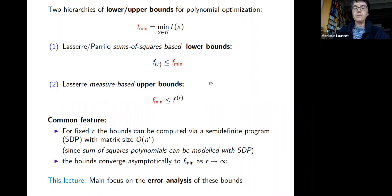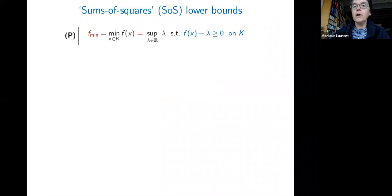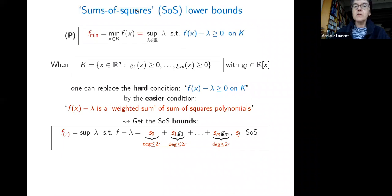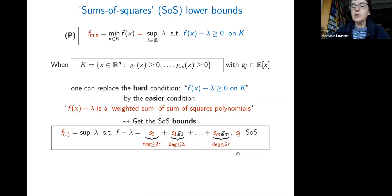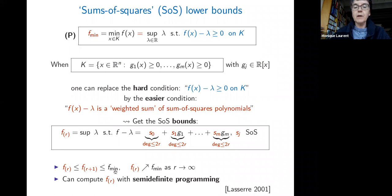To fix ideas: we want to minimize f over K, i.e., find the largest scalar lambda for which f minus lambda is non-negative over K. Since K is semi-algebraic (defined by polynomial inequalities), we replace this hard non-negativity condition by writing f minus lambda as a conic combination of the constraints, where the multipliers s_j are sums of squares, each with degree bound 2r.